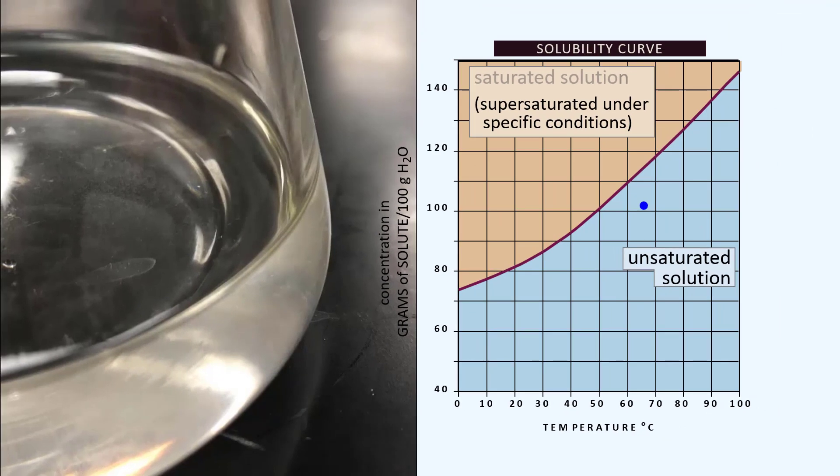Here's an unsaturated solution of sodium acetate and the blue dot tells us where we are on the solubility graph. This was cooled down but now the solute above maximum remains dissolved. So now we're looking at a supersaturated solution. It looks the same. We don't see any difference.